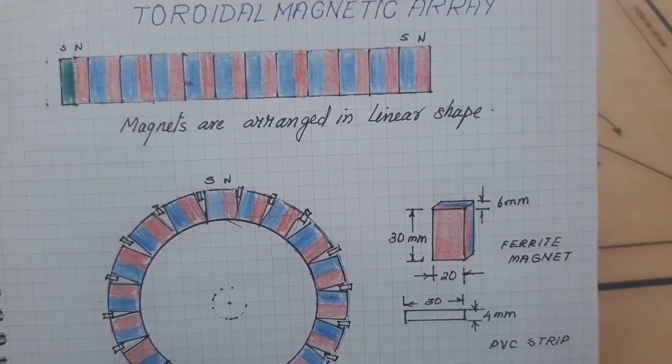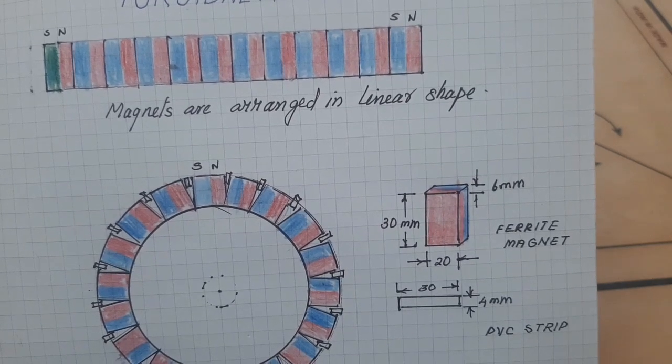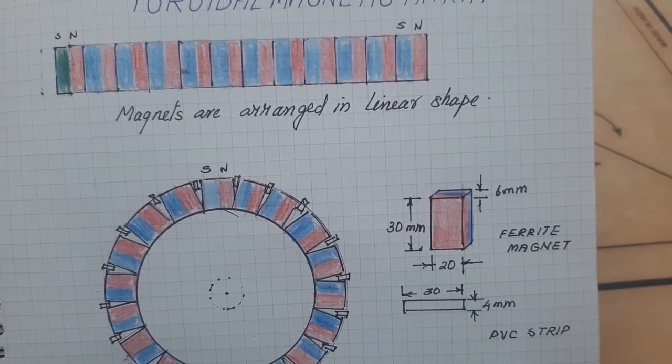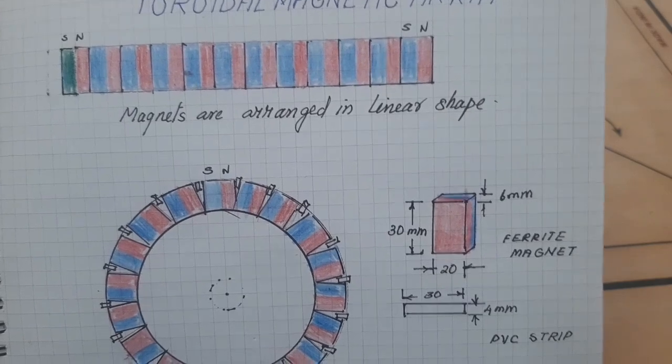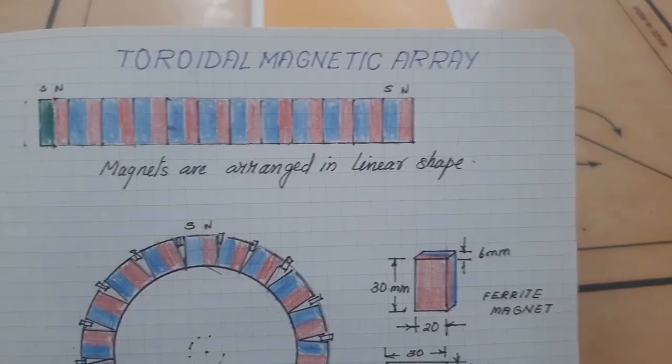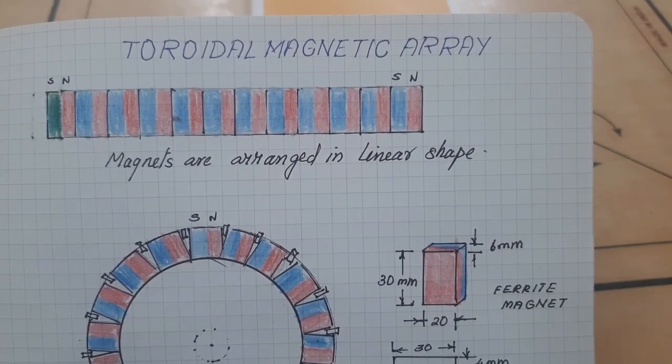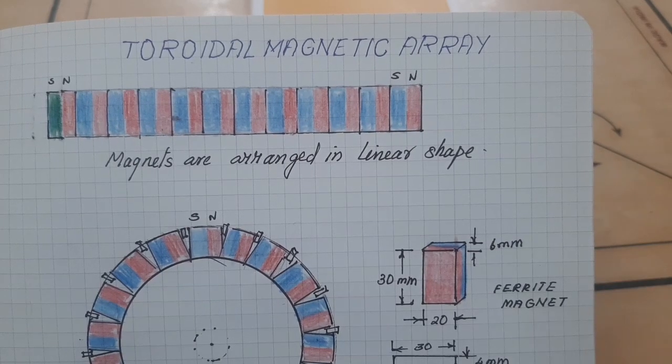The stator has toroidal shape permanent magnets and the rotor is four pole permanent magnets. Here some basic concepts of the magnetic properties I want to explain.